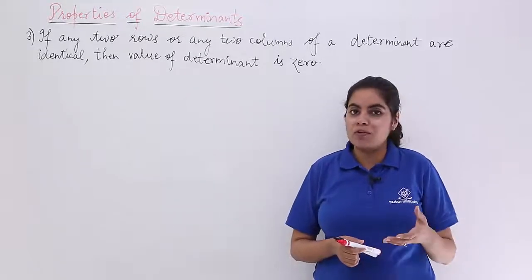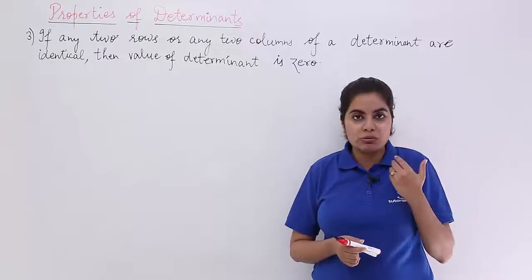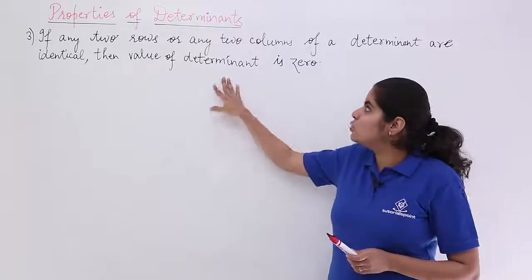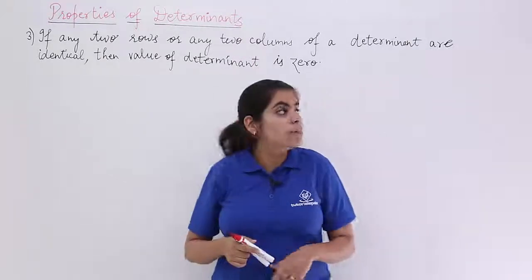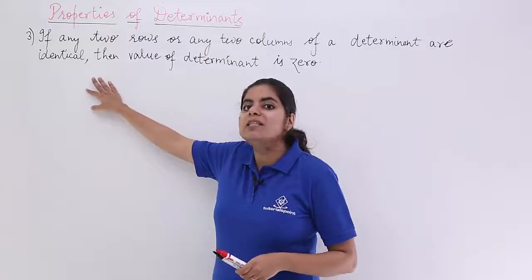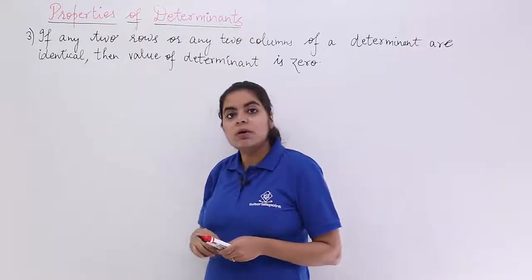As I have already told you, it is advisable to watch the previous videos so that you understand this video properly. Now, the property says what? If any two rows or any two columns of a determinant are identical, that means same, then the value of the determinant is 0.